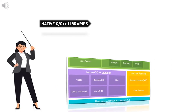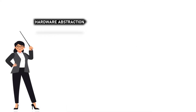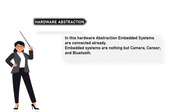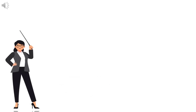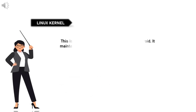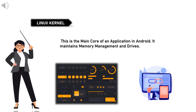Native C/C++ libraries are already inbuilt in our system. Hardware abstraction layer connects embedded systems such as camera, sensor, and Bluetooth. Linux kernel is the main core of an Android application — it maintains memory management and drivers.